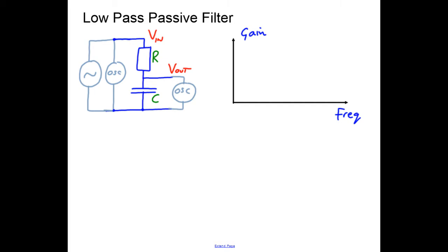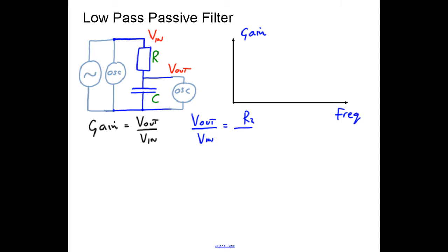We want to work out how the gain varies as a function of frequency. The gain, as we know, is V out divided by V in — that's our first piece of information. The second thing we're going to do is make use of the potential divider equation, which is V out divided by V in equals R2 over R1 plus R2.